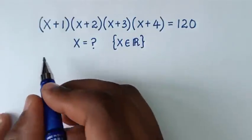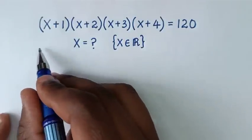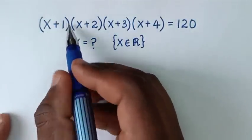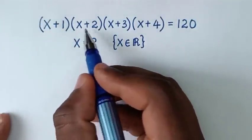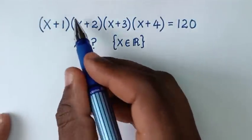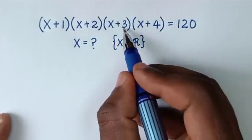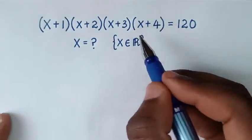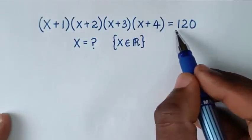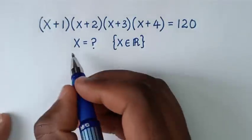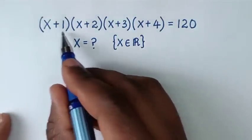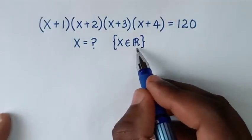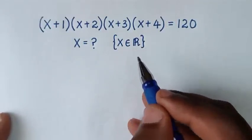Hello, you are welcome to solve this math problem, which is (x+1)(x+2)(x+3)(x+4) = 120. To find the values of x from this math problem, set that x is an element of the real numbers.